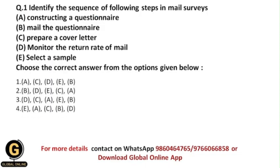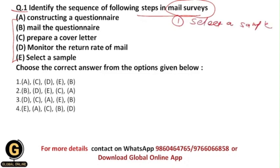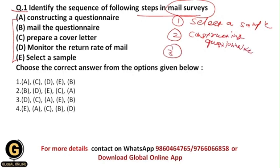First question: identify the sequence of steps in mail surveys. You are given five steps and need to write them in sequential order. In mail surveys, the survey is administered through mail — we ask questions to respondents through mail. The first step is to select a sample, and the second step is constructing a questionnaire.